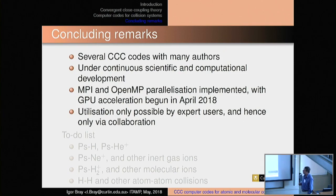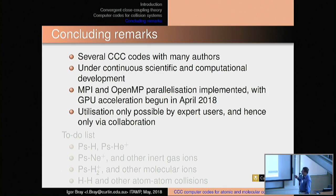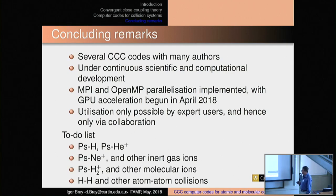In concluding remarks: there are several CCC codes with many authors — not a single one of us knows how to run everything. Many of these things were developed by my colleagues, but the structure is much the same. It's under continuous scientific and computational development. MPI and OpenMP parallelization are implemented, but GPU acceleration just began in late April — it's going to be a major task, particularly for me while being departmental chair. Utilization is only possible by expert users, and hence only by collaboration. Lots of things to do, many PhDs to be done — positronium-hydrogen, four-body problems with rearrangement, multi-centre, atom-atom collisions, combination with molecules. In many ways, this is just the beginning.